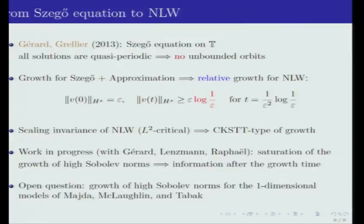Finally, let me briefly tell you how we go from the Szegő equation back to the half-wave equation. First of all, using the growth for Szegő and the approximation, we get a relative growth for the wave equation in the sense that from epsilon we can reach epsilon times the log. This is still very small if epsilon is small, but now you can use a very cheap trick, which is the scaling invariance of the equation. This equation is L^2-critical, so if you rescale it by a factor which is between epsilon and epsilon times the log, then you get indeed this arbitrary large growth in the CKSTT spirit.